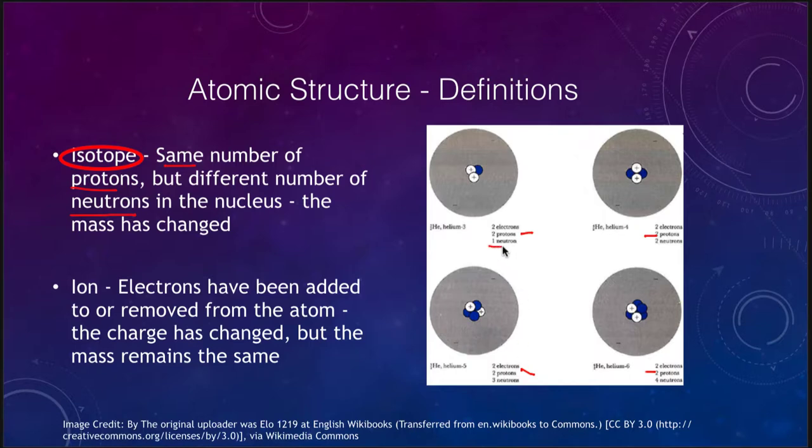Helium-3 has one neutron, helium-4 has two neutrons, helium-5 three, and helium-6 four. So what has changed is the mass of the atom. Helium-3 has the least mass and helium-6 would have the most mass. So we can tell which atom they are depending on the number of neutrons in the nucleus. That can change. If you change the number of protons, you change actually what the atom is.